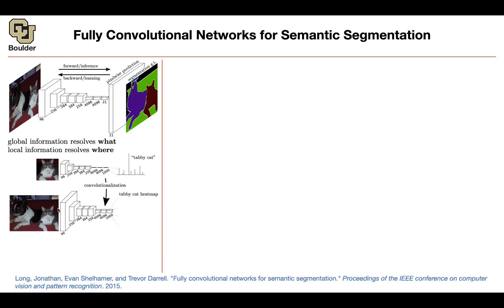Convolutions don't depend on the resolution of the input image because you have a filter sliding over the image. Once you do that, rather than ending up with a single number you end up with a feature map. You can replace the final layer — previously 1000 labels — with 21 labels, because the dataset we're working with has only 21 categories. Up until that point in the network, you can copy and paste weights from your ImageNet network, just reinterpreting the fully connected layers as convolutions.